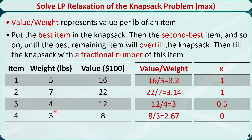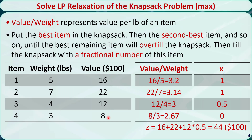Last, because the knapsack is full, we cannot put any of item 4 in, so x4 is 0. The total value of the items is 16 times 1 plus 22 times 1 plus 12 times 0.5, which is $4,400.